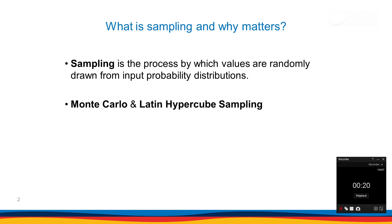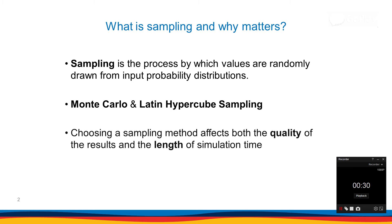There are two common approaches for sampling: Monte Carlo and Latin hypercube sampling. I'm going to cover both methods in my presentation. Choosing a sampling method affects both the quality of the results and the simulation time. In general, there is a trade-off between quality and timing.